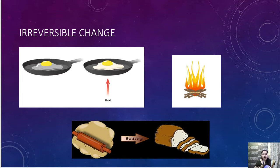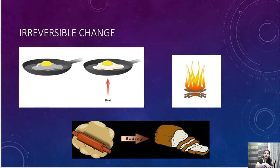Same with baking: when we have atta (flour) we make a dough and then prepare a chapati or bread. Once the chapati or bread is cooked, we cannot convert that roti back to flour or back to the same dough. So this is also an irreversible change. Same is with vegetables — we cannot convert cooked vegetables back to their raw form. That is also irreversible.